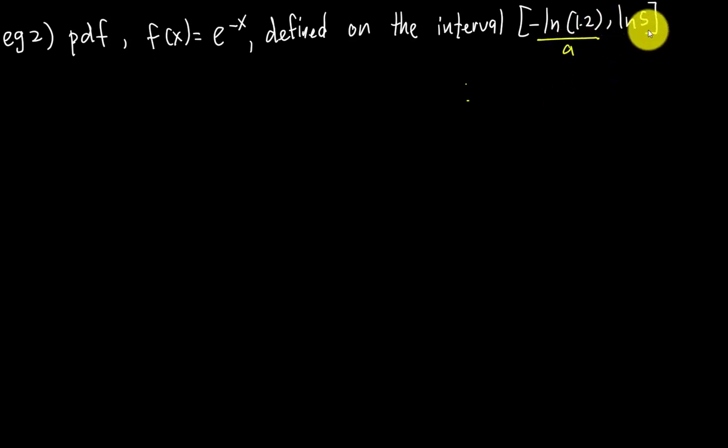To get the CDF, capital F(x), I integrate from a, which is -ln(1.2), to x. We integrate e^(-x) dx.